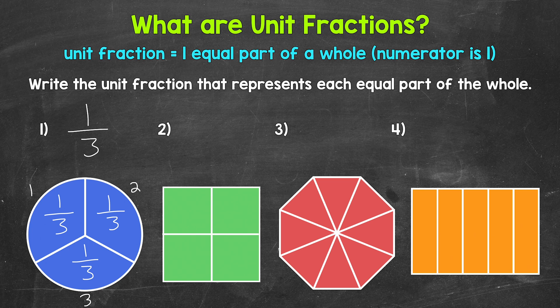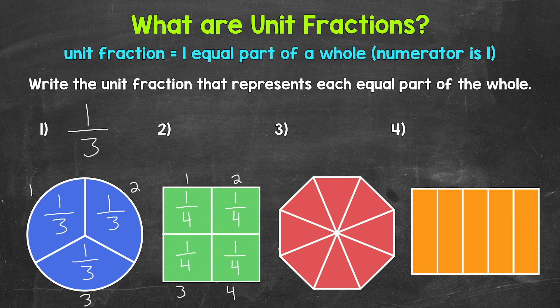Let's move on to number two. What unit fraction represents each equal part of the whole? We have one, two, three, four equal parts — the whole square has been divided into four equal parts. So four is going to be our denominator, and each equal part is one out of the four total equal parts. Each part is one fourth of the whole. So one fourth is the unit fraction that represents each equal part of the whole.